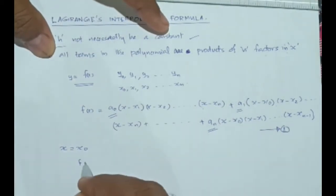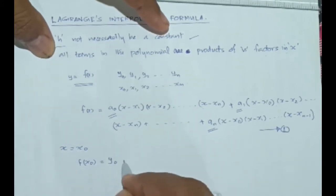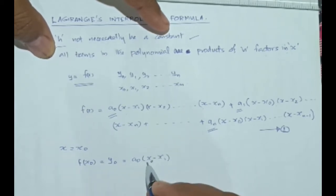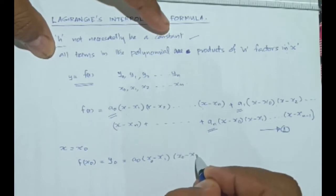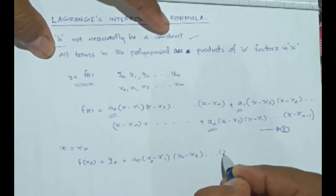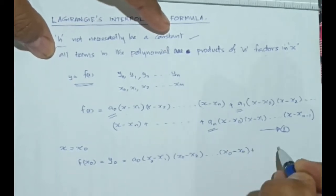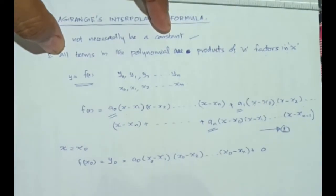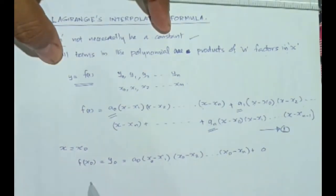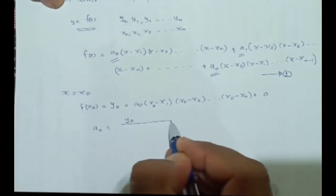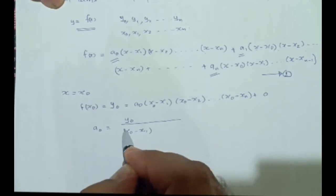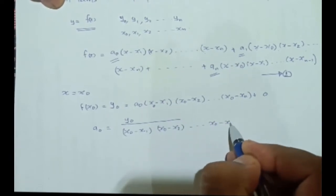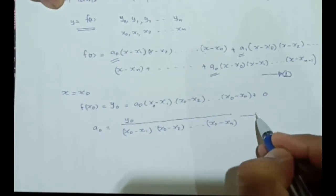Then equation 1 becomes f(x0) = y0 = a0·(x0−x1)·(x0−x2)·...·(x0−xn), plus 0, because in the second term, x becomes x0 and that term vanishes, and all other terms vanish similarly. So from this relation, we can find a0 = y0 / [(x0−x1)·(x0−x2)·...·(x0−xn)]. Let's put this as equation 2.